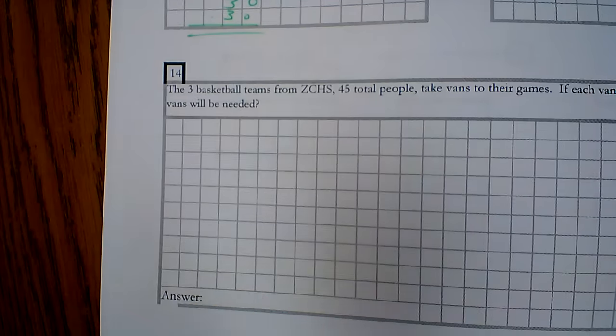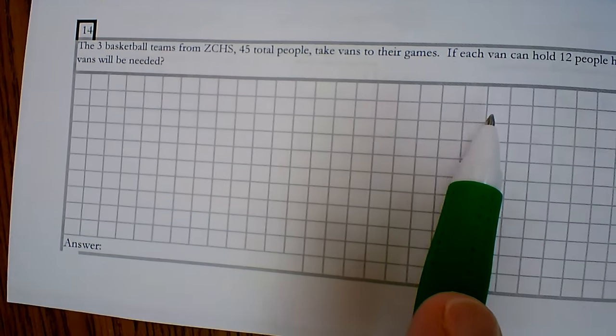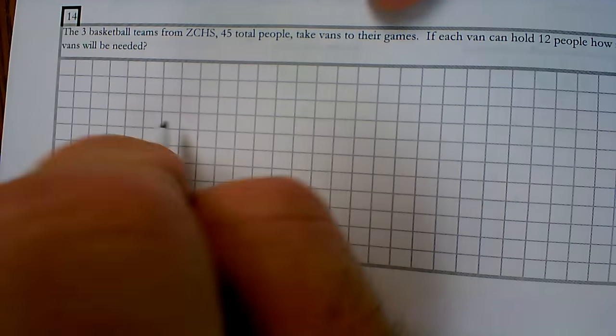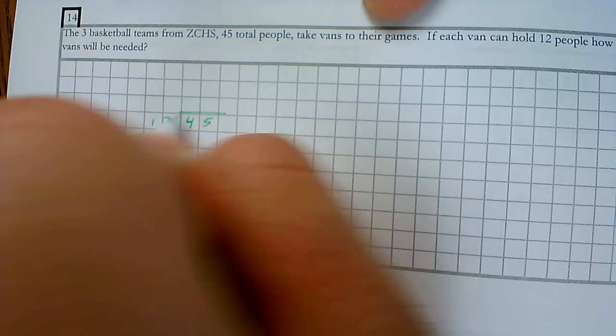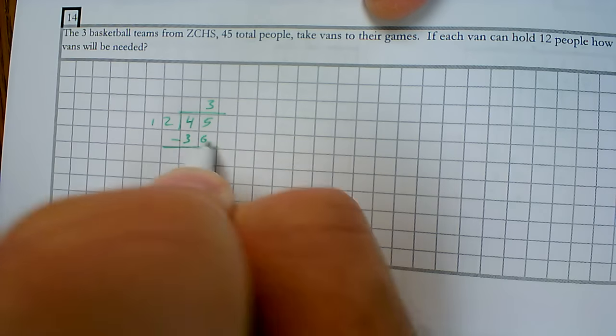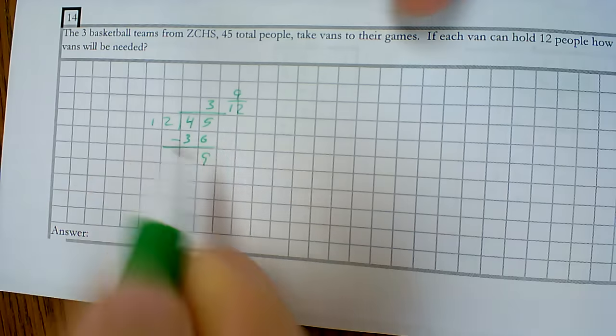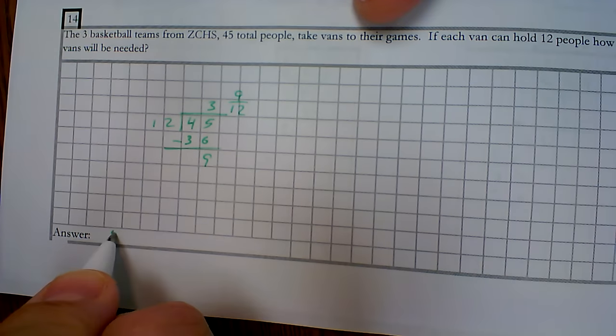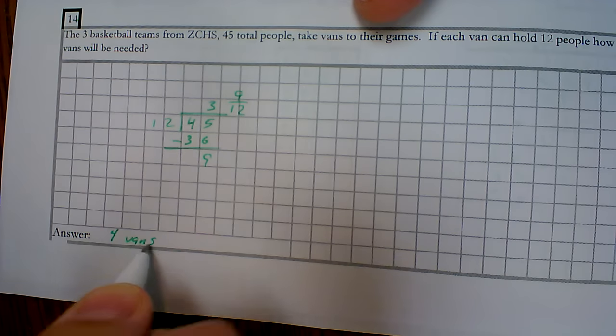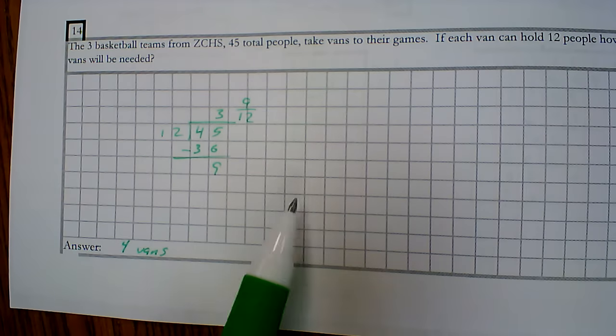So the 3 basketball teams from ZCHS, 45 total people, take vans to their games. If each van can hold 12 people, how many vans will be needed? So 45 divided by 12. So, 3 groups, so 36, subtract, and I get 9. So my answer is 3 and 9 twelfths. Can I take 9 twelfths of a van? No. So I need 4 vans. If I take 3 vans, those 9 people get left behind. We don't want to leave anybody behind.